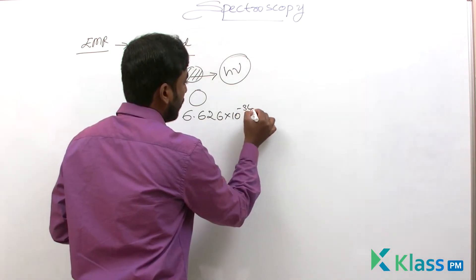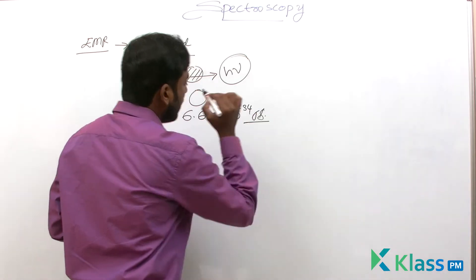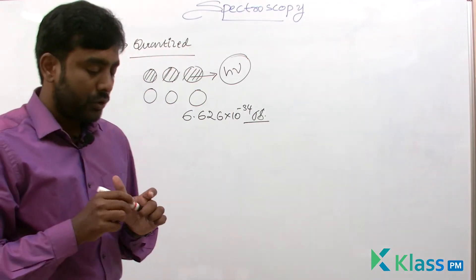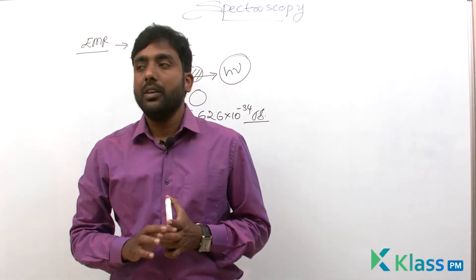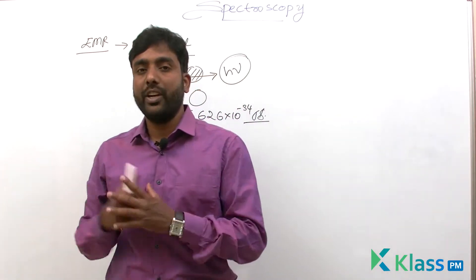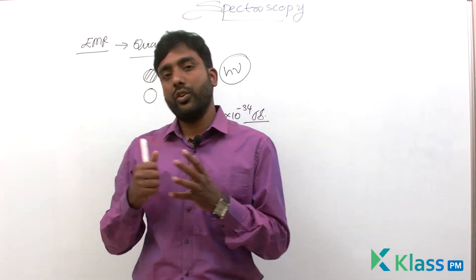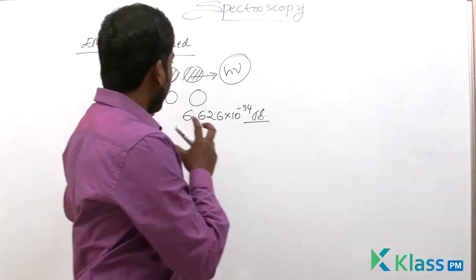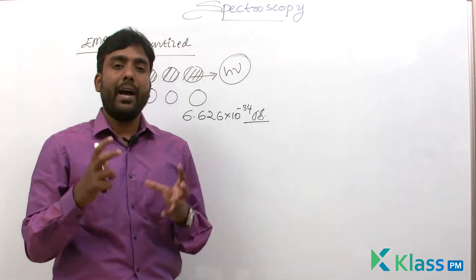According to Planck, electromagnetic radiations do not have continuous energy. They have discrete values, discontinuous energy, and each electromagnetic radiation has a packet of energy.